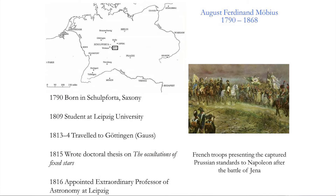In 1806, when Möbius was a 16-year-old schoolboy, French troops defeated Prussia and Saxony at the Battle of Jena, not far from his home. The shock of this decisive defeat led to an upsurge of patriotism and a renewal of education and intellectual life. New institutions and social structures were promoted. The University of Berlin was founded three years later, in 1809, developing during the 19th century into the leading research-oriented institution for mathematics.